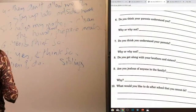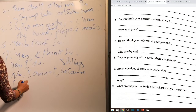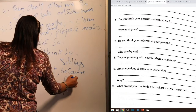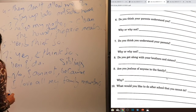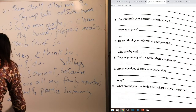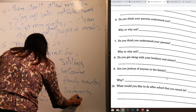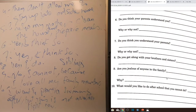Question nine: 'Are you jealous of anyone in the family?' No — 'I'm not jealous of anyone in the family because I love all my family members. I don't envy anyone — I'm tolerant with all.' Question ten: 'What would you like to do after school that you cannot?' Answer: 'I want to practice swimming after school, but it's not available right now — we don't have a closed swimming pool, I can't find a good coach, or we don't have enough money.'